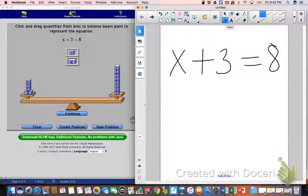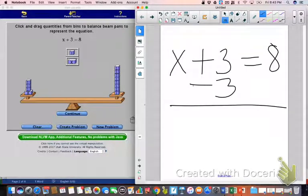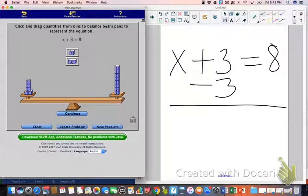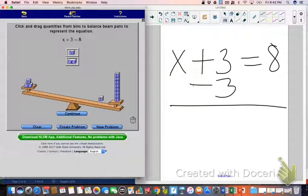Of course, the opposite or inverse of plus 3 is a minus 3, which I'm going to show here on my paper. So that is a plus 3 that I am taking away. So in order to model that I'm taking it away over here on the balance beam, I'm simply going to yank them off there. 1, 2, and 3.